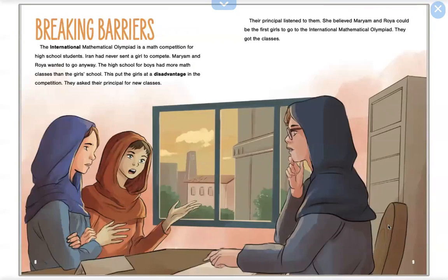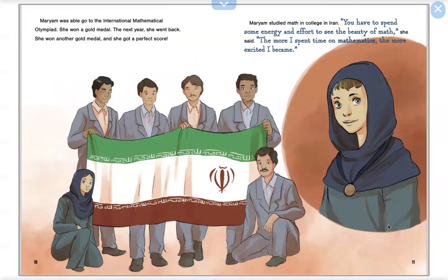Maryam was able to go to the International Mathematical Olympiad. She won a gold medal. The next year, she went back. She won another gold medal, and she got a perfect score.